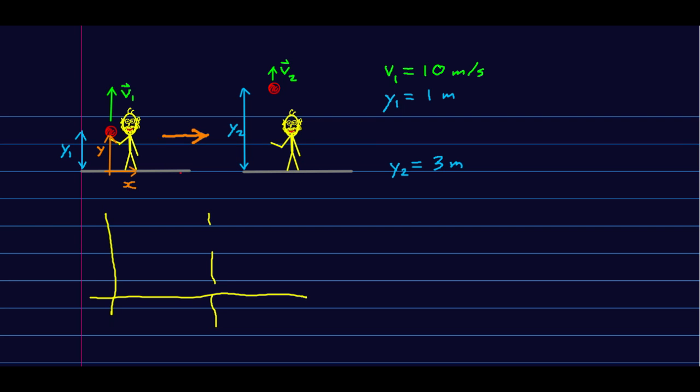Let's return to the case of me throwing a ball up into the air, but now do it with numbers. Say when the ball leaves my hand it's going up at 10 meters per second, and I've set my axes down on the floor. At the moment it leaves my hand it's a meter above the ground, and we're interested in how fast this ball is going when it's three meters above the ground.